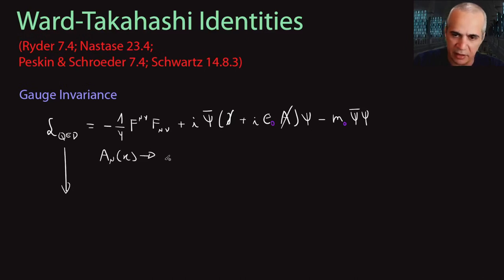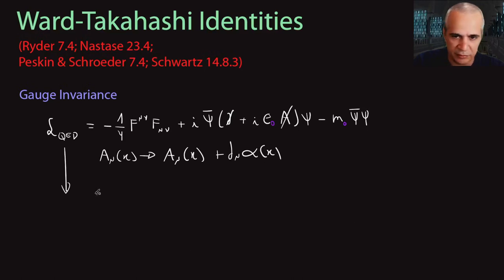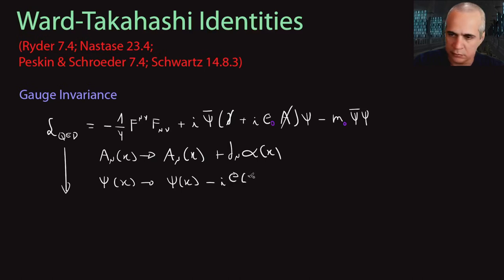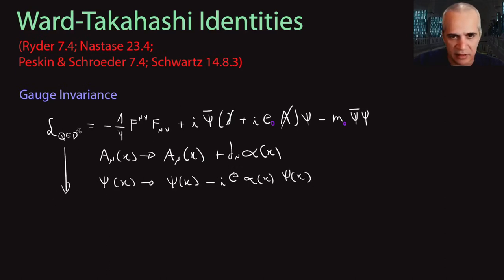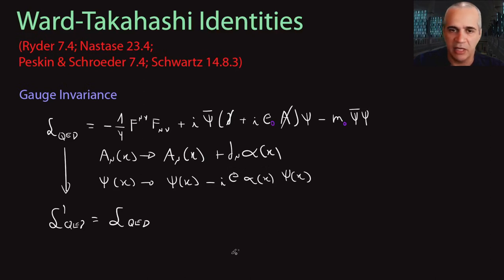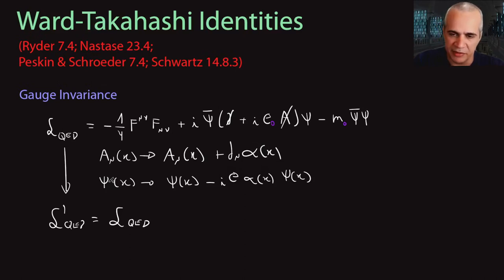This Lagrangian has a symmetry under transformations of the fields. If I do a transformation which takes the photon field A_μ into A_μ + ∂_μ α(x) where α(x) is any function of position, and ψ transforms as ψ → e^{ieα} ψ — writing the infinitesimal version — then this Lagrangian goes into the same Lagrangian. So this Lagrangian is invariant under this transformation, and that's what I'm calling gauge invariance: a property of the Lagrangian under a transformation of the fields.